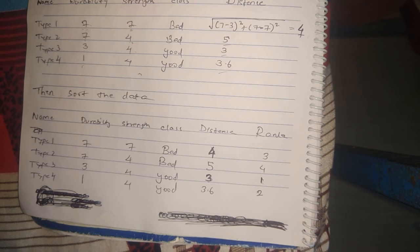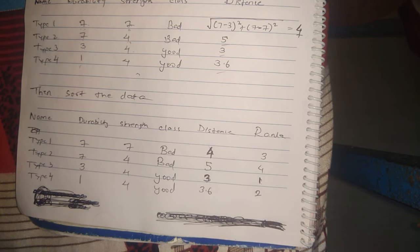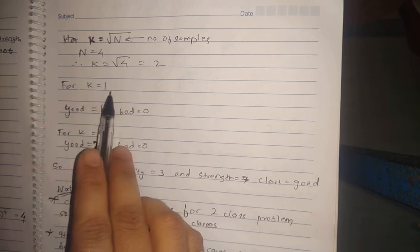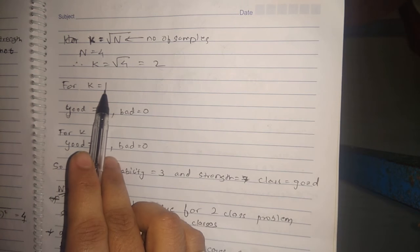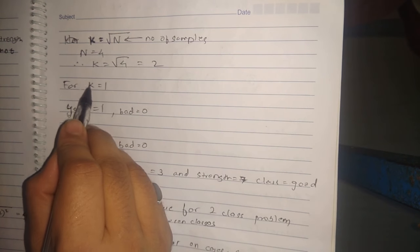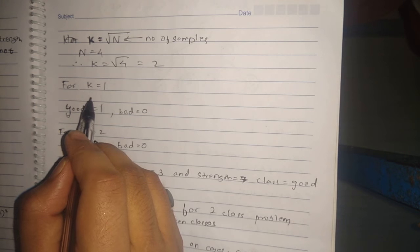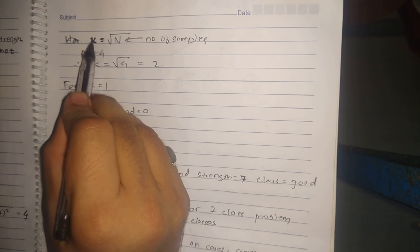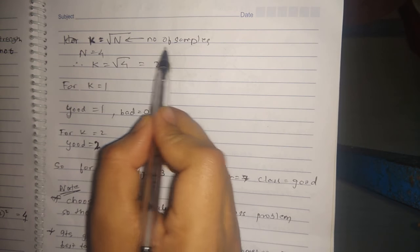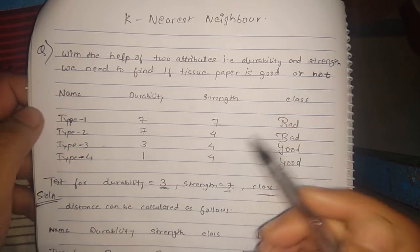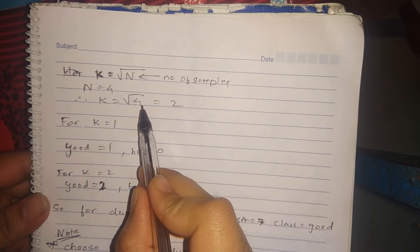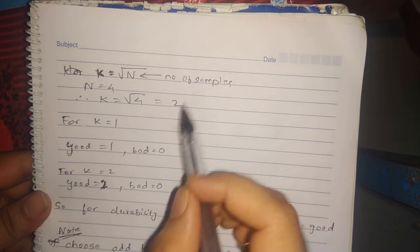Based on the sorting order we have ranked the values. For every value of k we need to get the class with the majority count. We take k as the square root of n, where n is the number of samples. In our case n = 4, so k = √4 = 2. So we will check for k = 1 and k = 2.